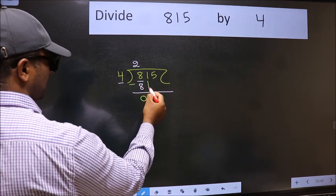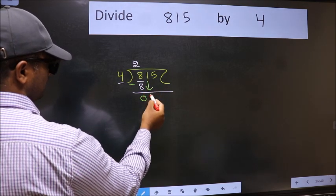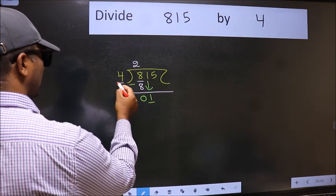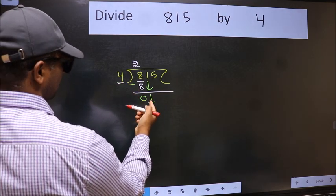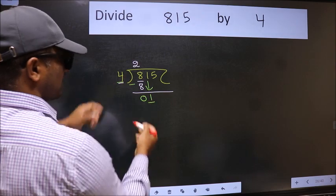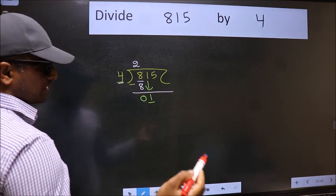After this, bring down the next number. So, 1 down. Now here we have 1 and here 4. 1 is smaller than 4, so we should bring down the second number.